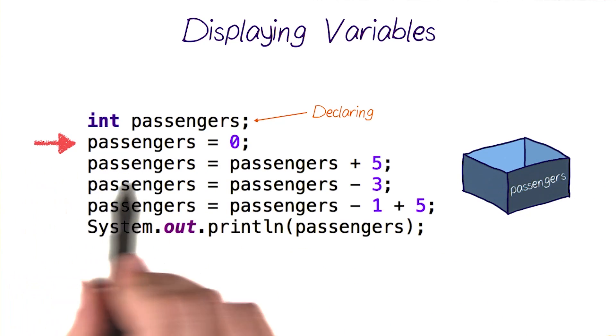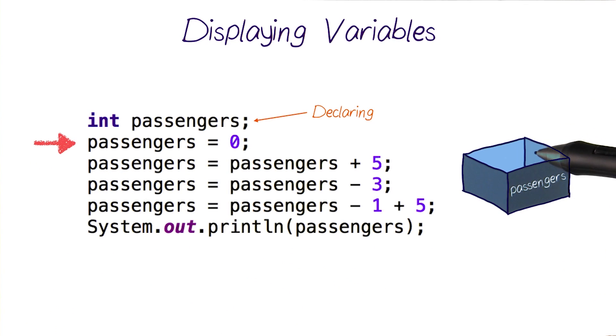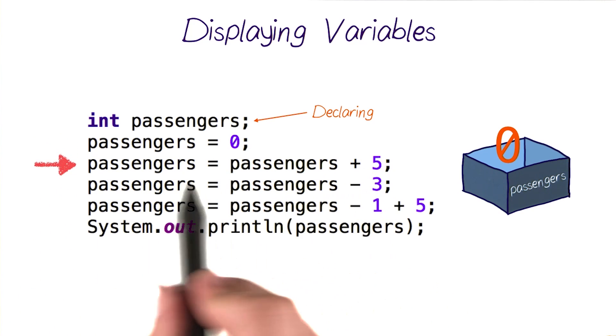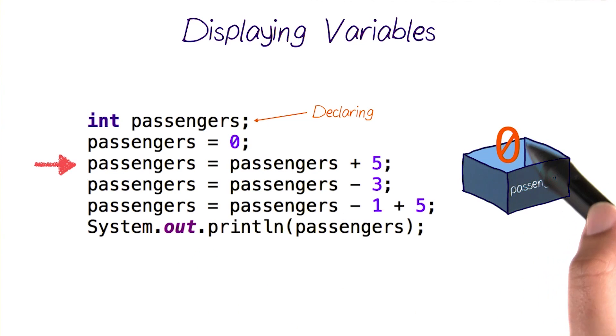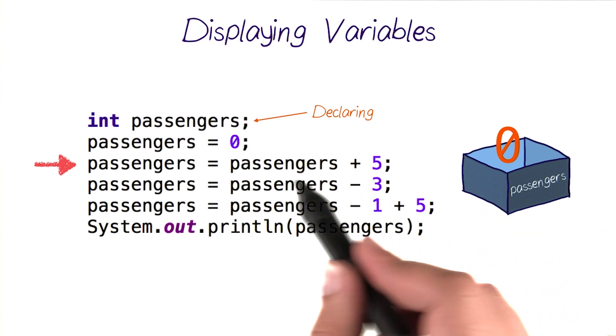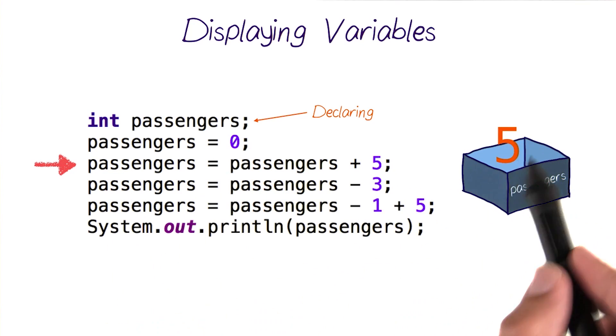The second statement is initializing it to 0, which is basically adding the number 0 inside. Then, the next statement is updating the variable passengers by adding 5 to its old value. Its old value happened to be 0, so when we add 5 to 0 and update it, it becomes 5.